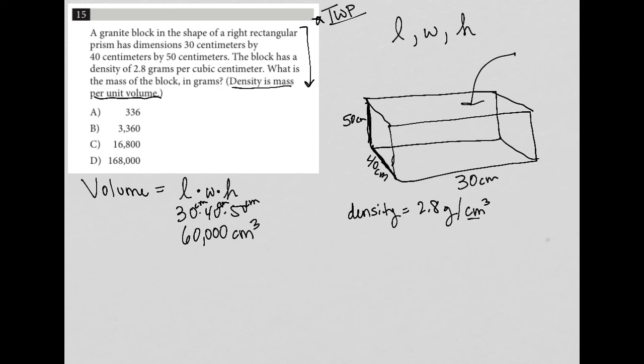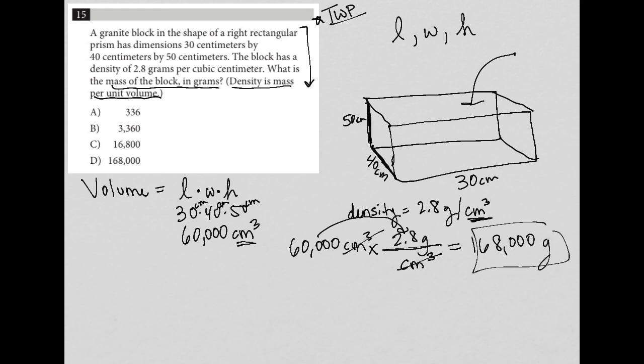And I see that I have cubic centimeters here, cubic centimeters there. So I'm going to say, hey, if I have 60,000 centimeters cubed, I can multiply that by the density, which is 2.8 grams per centimeter cubed. What that does for me is cross out my units here. So what I'm left with is 60,000 times 2.8 grams, which will give me the mass of the block in grams. So I'm going to multiply 60,000 times 2.8. And what I get is 168,000 grams. So that's my answer.